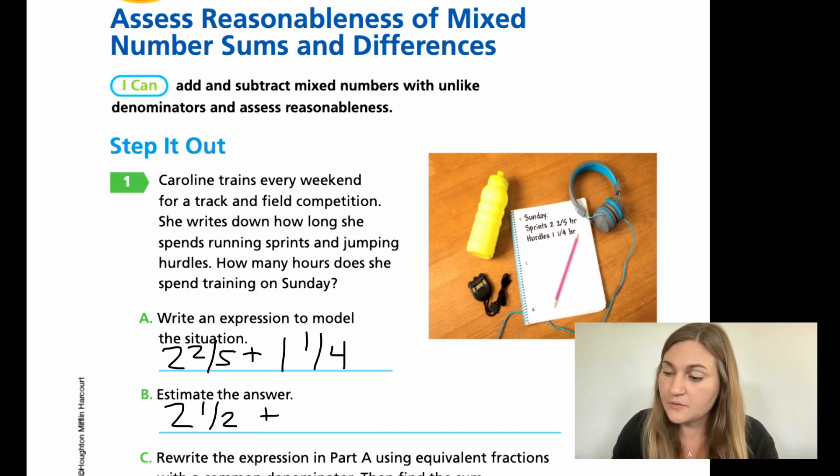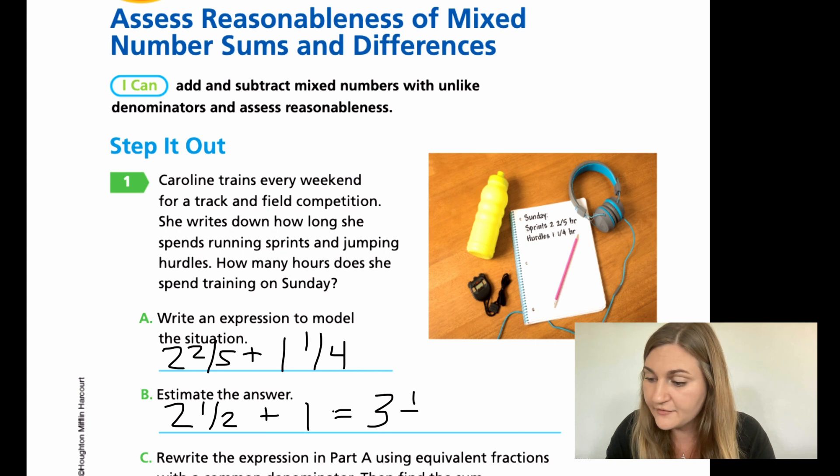And when I add it together, my 1 and 1/4, if you put 1/4 on a number line, it would be closest to 0. So I'm actually just going to leave that off and just say it's closest to 1. Those are my estimates. If I put these two together, 2 1/2 plus 1 more is going to be about 3 1/2. That is my estimated answer.